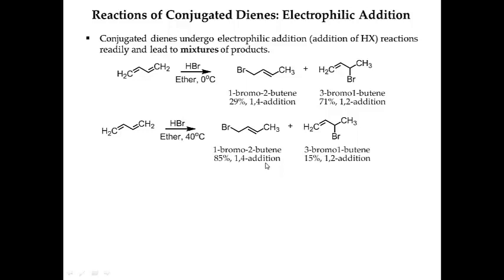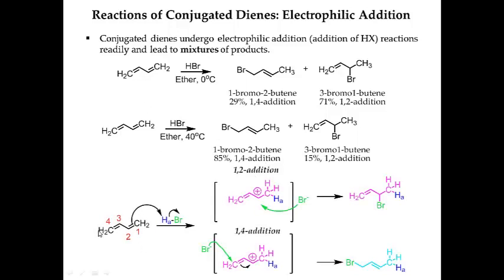Before we get into why this is happening, we need to understand the mechanism. In the mechanism, this is my diene — numbering from this end: 1, 2, 3, and 4. When this double bond attacks HBr, I generate a carbocation intermediate, just like we learned in Organic 1. The carbocation intermediate is on carbon 2, and because of that, it is allylic — adjacent to a double bond. For this reaction, you will only form the allylic carbocation; you will never form a non-allylic carbocation.